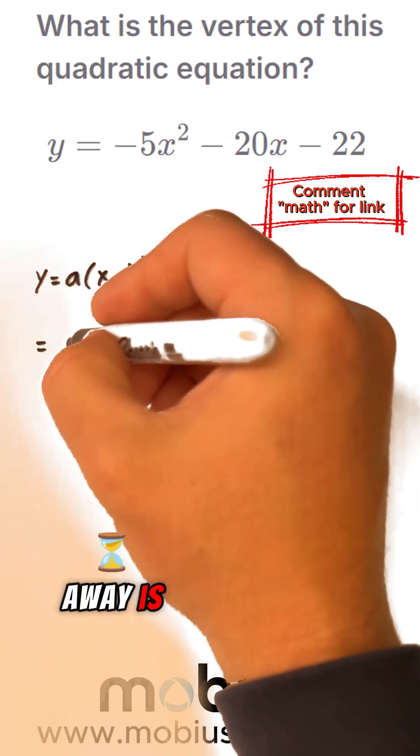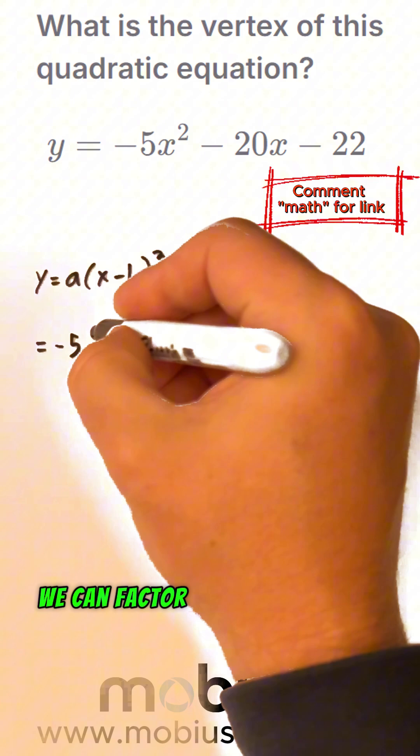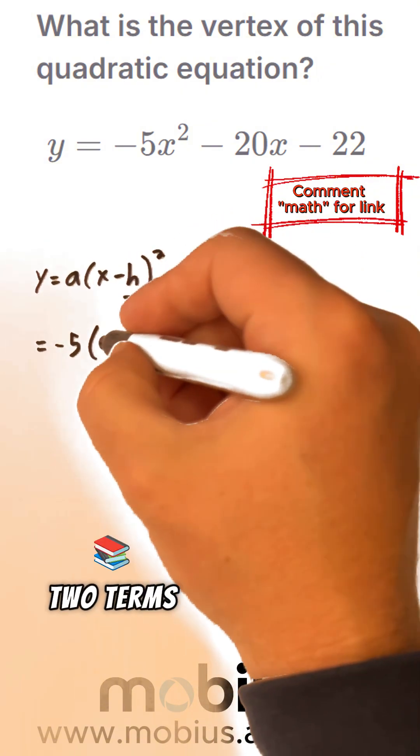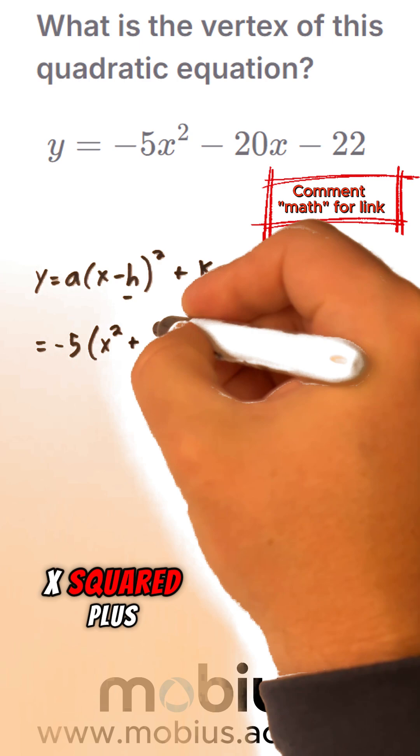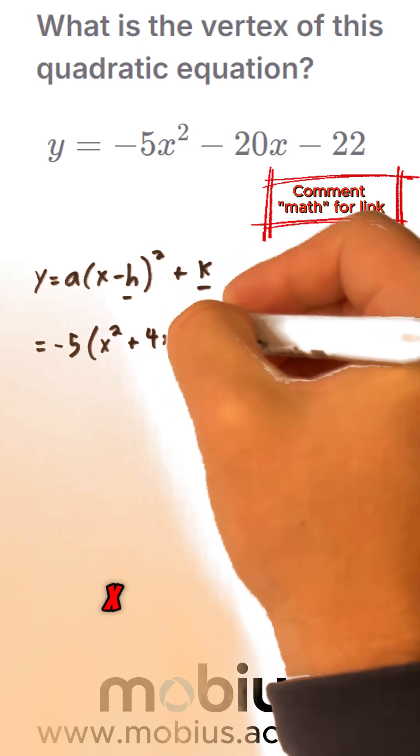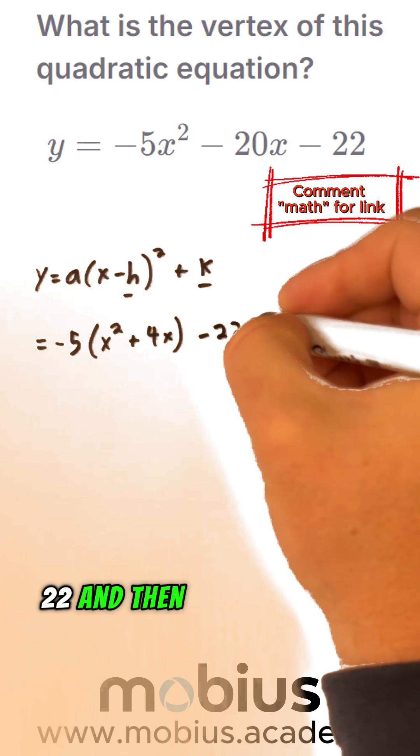One of the things we can see right away is we've got a negative 5 that we can factor out. We're only going to factor it out of the first two terms. So we're left with x squared plus 4x, put a bracket around that, and our minus 22.